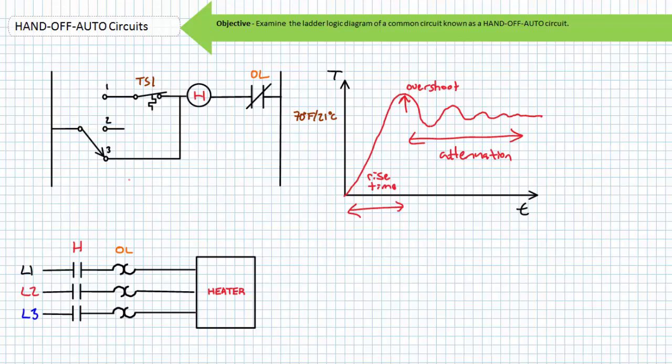The switch in position three is a manual bypass which energizes the H contactor coil and turns on the heater whether the temperature switch calls for it or not. The paint could be peeling off your walls and your goldfish could be belly up in a bowl full of boiling water and the heater would still be on at full blast in position three.